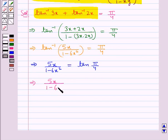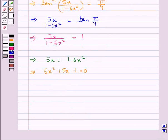So we get 5x upon 1 minus 6x square is equal to 1. This gives us 5x is equal to 1 minus 6x square, or 6x square plus 5x minus 1 is equal to 0. Now we split the middle term of this quadratic equation. So we get 6x square plus 6x minus x minus 1 is equal to 0.